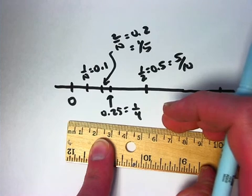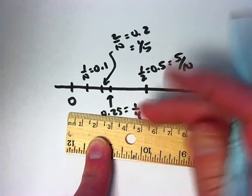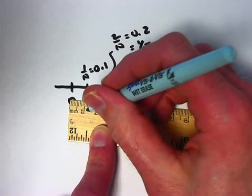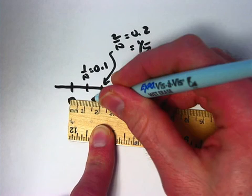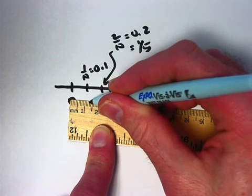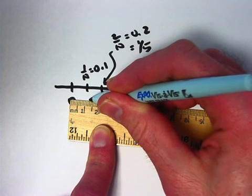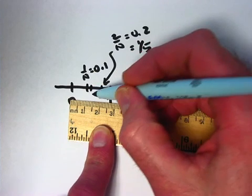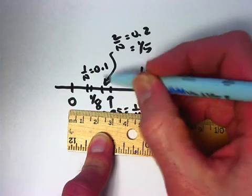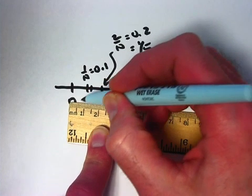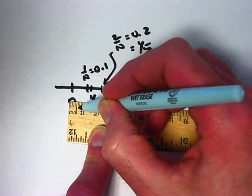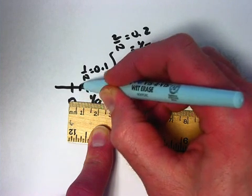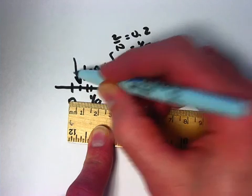Finally, real quick, what about 1 eighth and 1 sixteenth? 1 eighth as a decimal was 0.125. Here's the 0.1. 0.12 is a little further to the right there. Can you see that? There's a 0.13 maybe right about there. Halfway between them. Somewhere right about there is 1 eighth. And 1 sixteenth was 0.0625. 0.06 is going to be right about there. 0.07. A quarter of the way between 0.06 and 0.07. Somewhere right around there is 1 sixteenth.